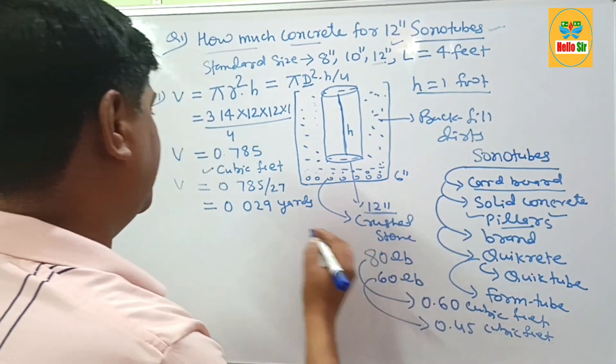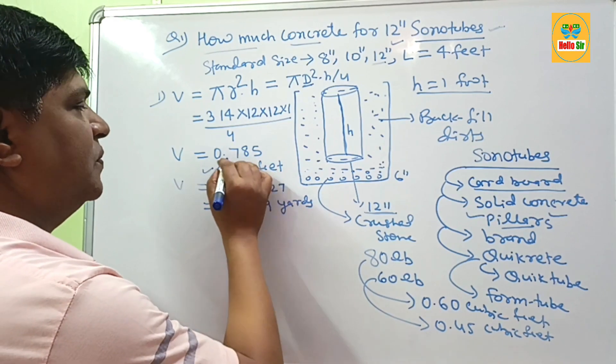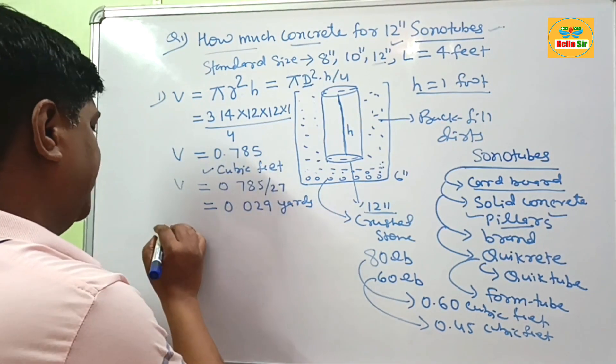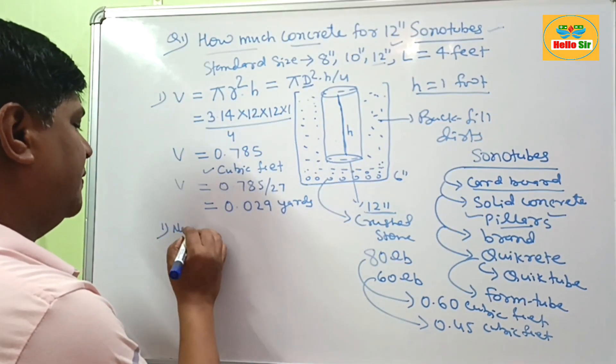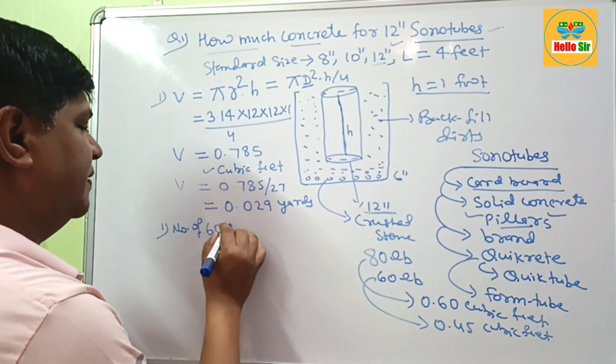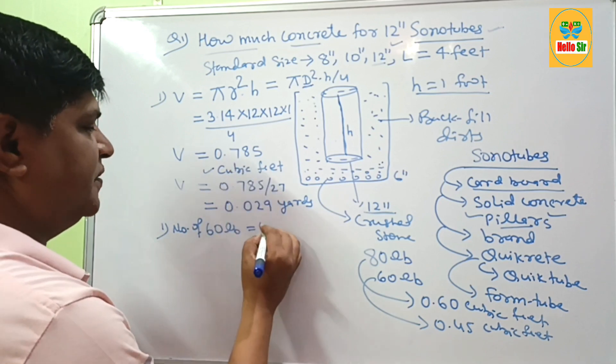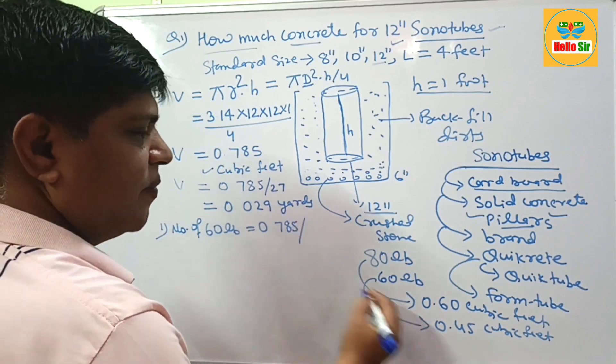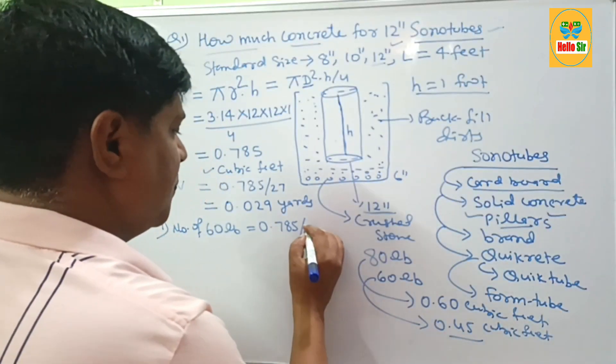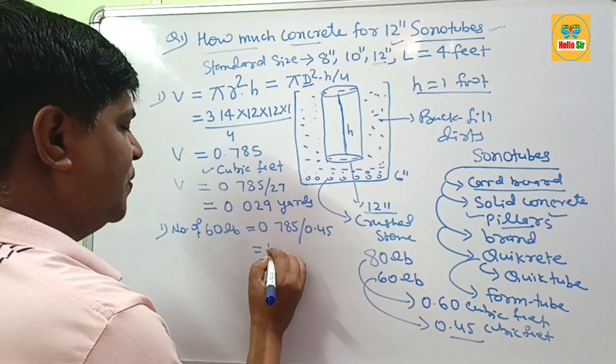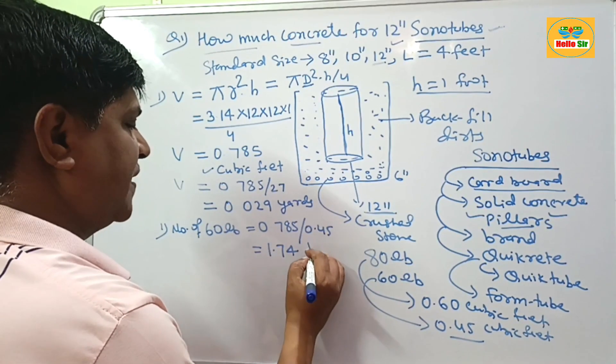And your total cubic feet is about 0.78 feet. If you calculate number of 60 lb bags, then you divide 0.785 divided by 0.45. This will be about 1.74 bags.